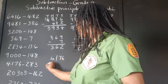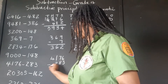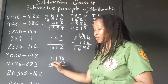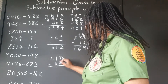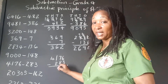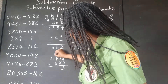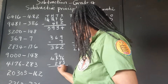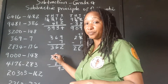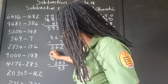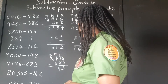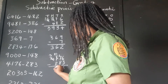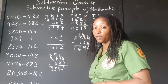4,176 take away 283. Line up the units, tens, hundreds. There is no other 1,000 in this row. 6 take away 3 is 3. 8 is bigger than 7, so take 1 out of the 100, leave no hundreds, bring it here as 1 group of 10 — now we have 17. 17 take away 8 is 9. We can't take 2 from 0, so take 1 out of the 1,000, leave 3,000, bring it here as 100. That's 10 hundreds take away 200 — 800 left. Bring down the 3. Answer: 3,893.